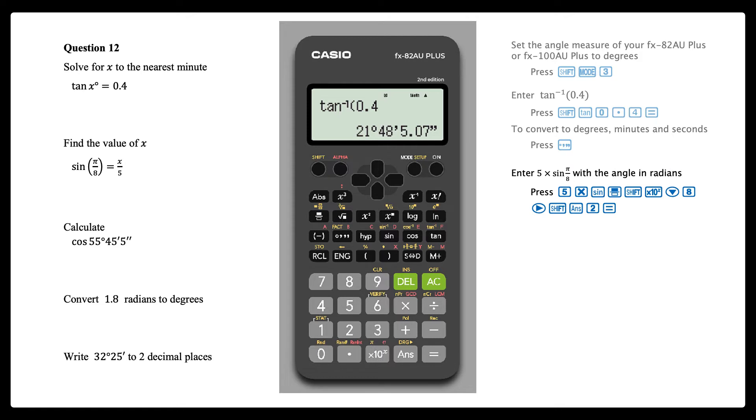The solution to this equation is 5 times by the sine of π on 8 radians. Enter this using the sine key, the fraction key and by pressing shift and the times 10 to the power of key to enter π.